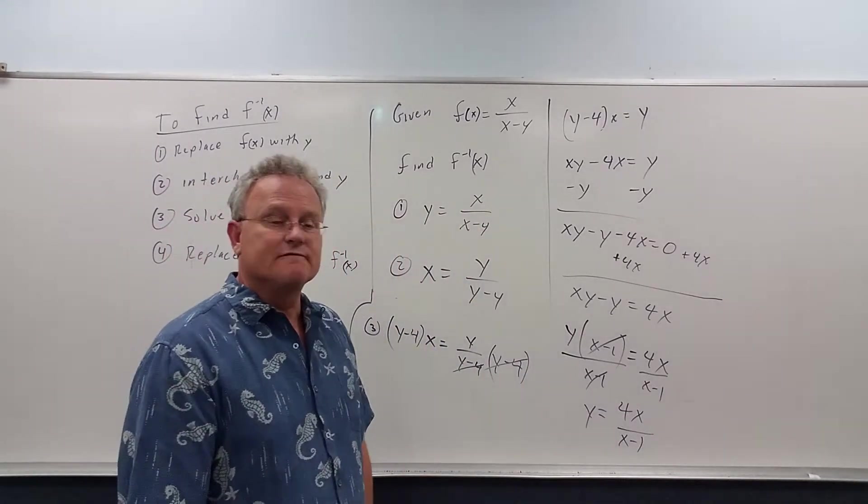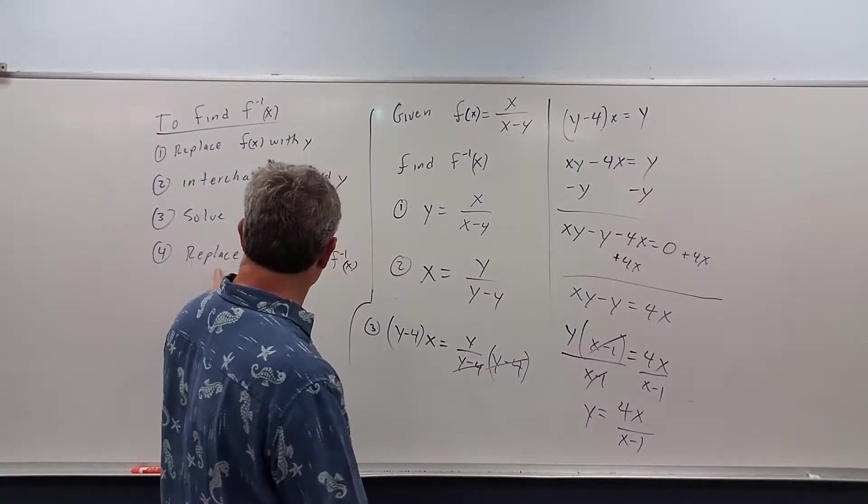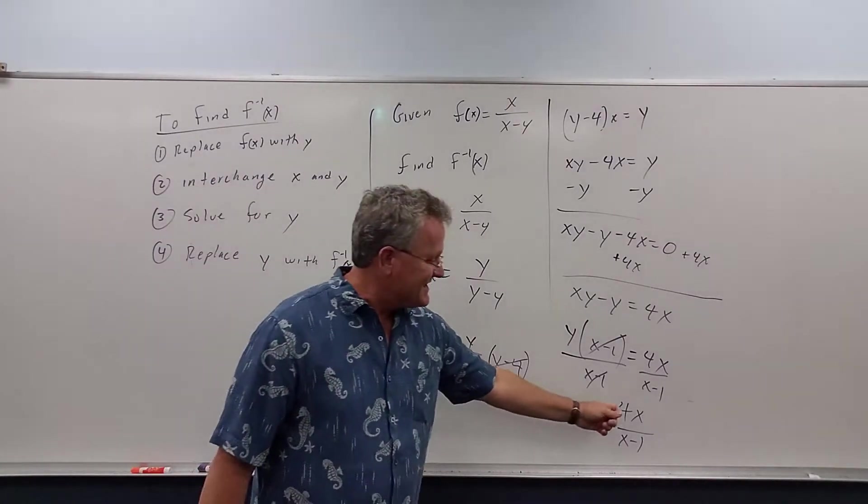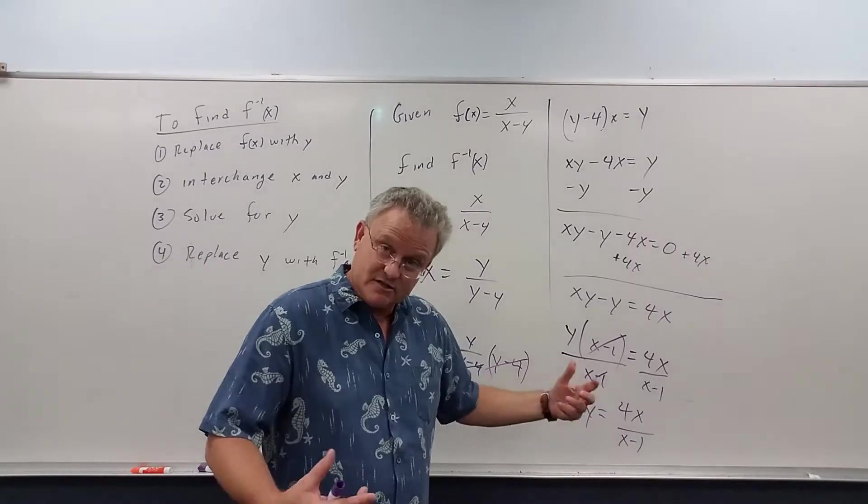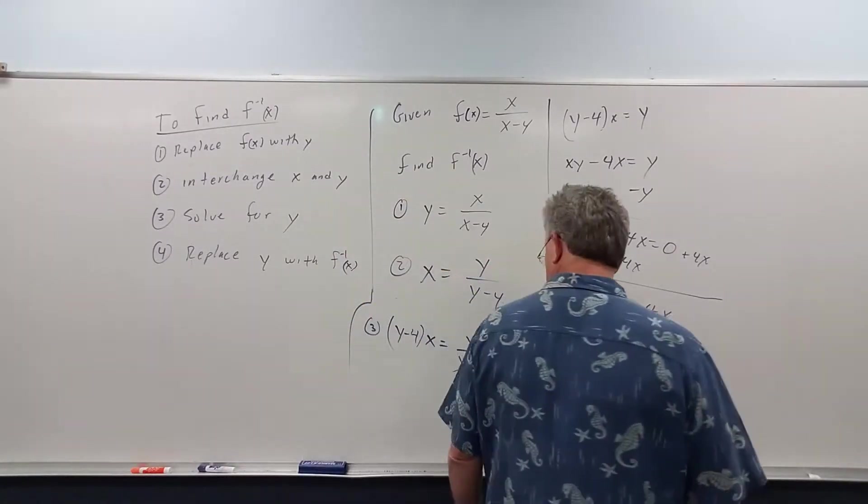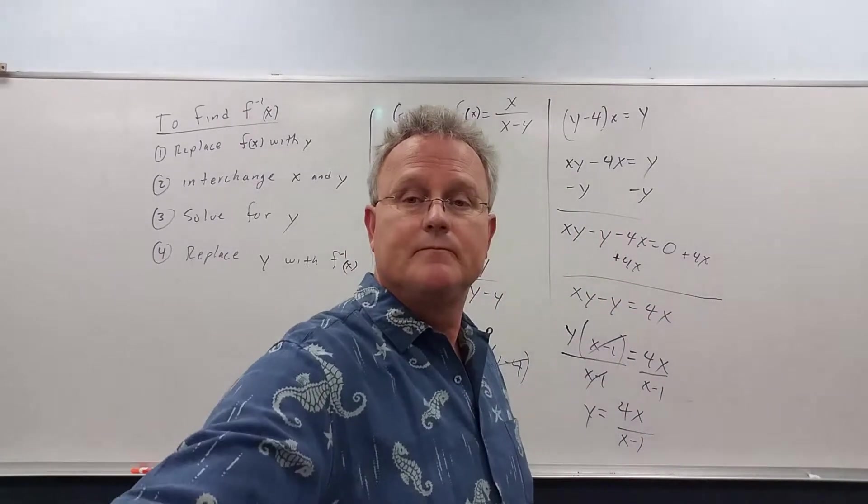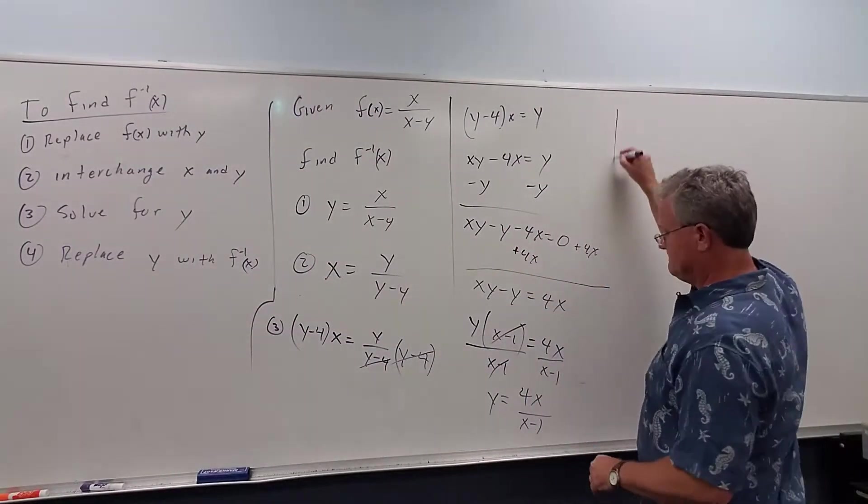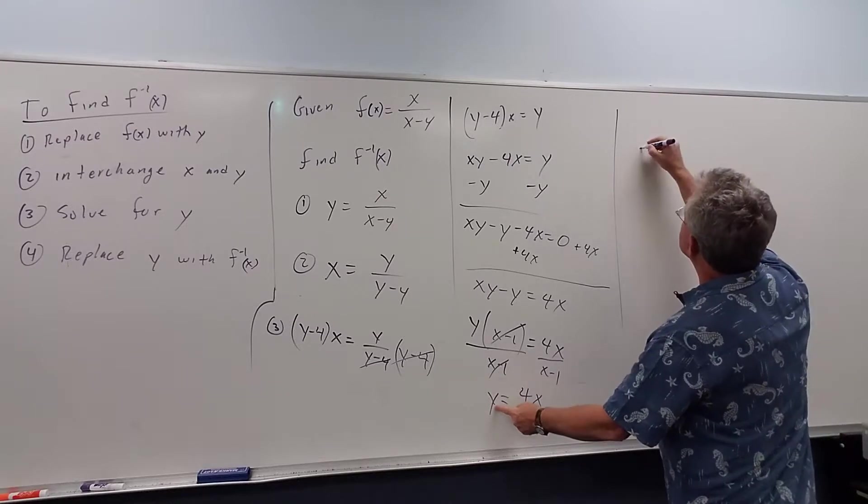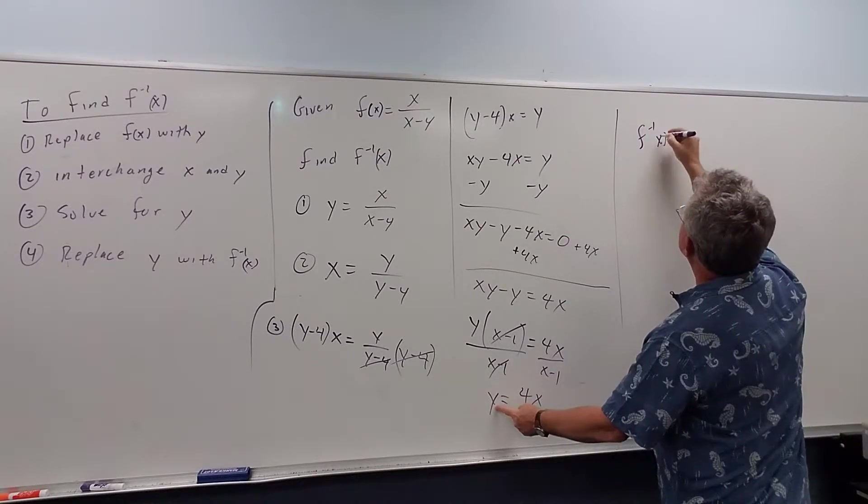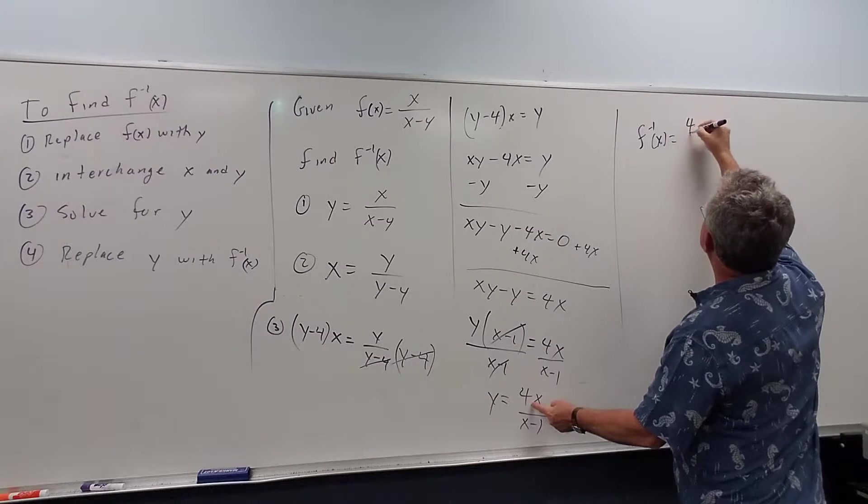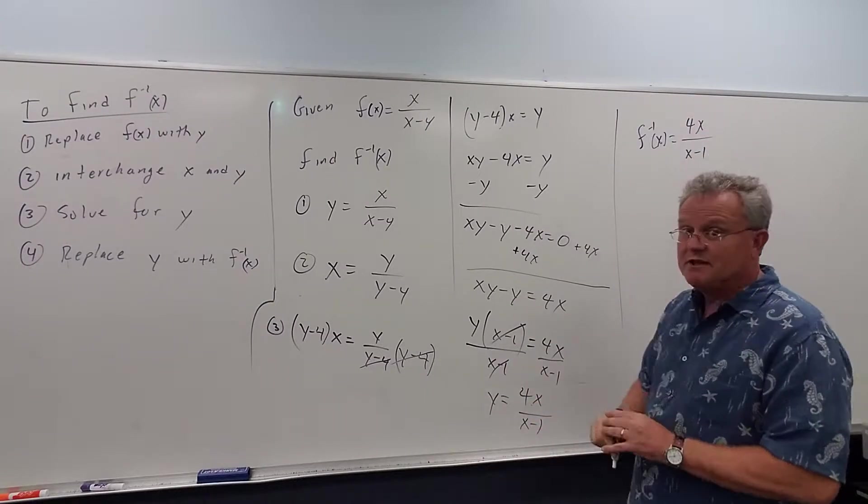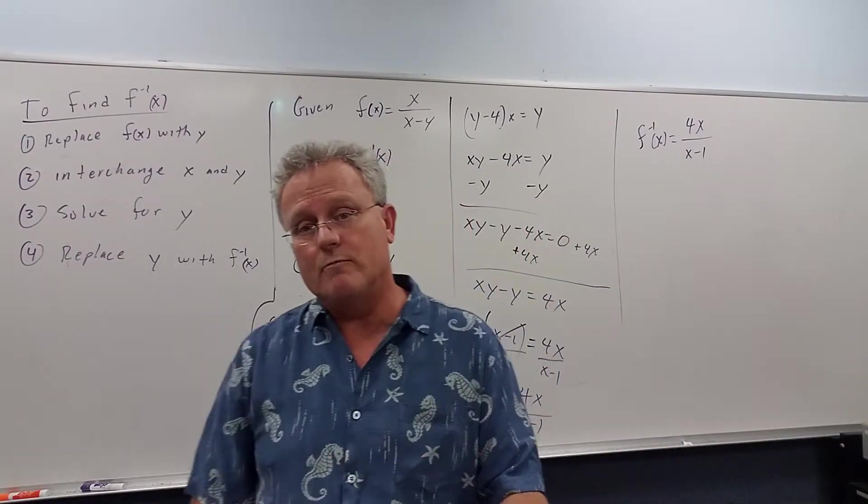That really is the inverse function, but let me do the fourth step. The fourth step says replace y with f inverse of x because this only has x's in it. It's a function of x. So let's write this as f inverse is equal to 4x over x minus 1.